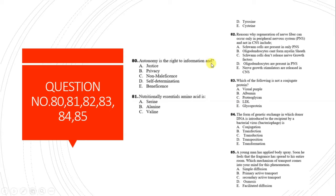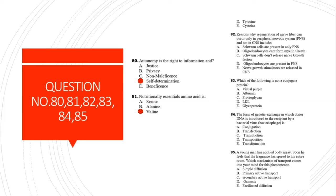Question 80: Autonomy from biomedical ethics refers to the right to information and self-determination. Question 81: A nutritionally essential amino acid from the options is valine. Valine is an essential amino acid.